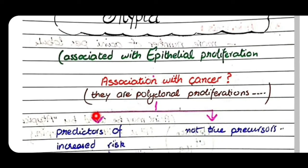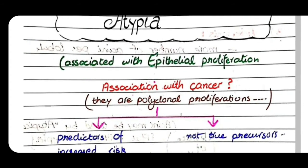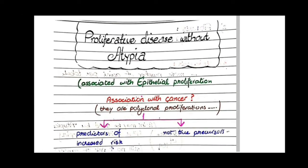Still, these lesions are predictors of increased risk. Chances of mutations are greater in cells that are dividing rapidly. Even though these are not true precursors of cancers, they are proliferating rapidly, so these cells have a chance to undergo mutation and can result in cancer later on. They are predictors of increased risk, but not true precursors in themselves.